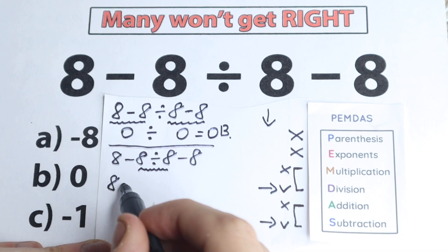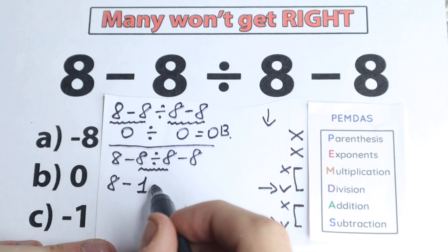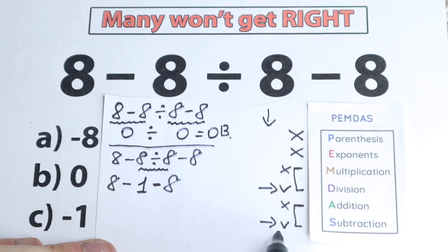So we have 8 minus 8 divided by 8, this is our first step. So we have 8 divided by 8 equal to 1, and we have minus minus 8. Let's subtract it, this is our last step, all the time we have subtraction.